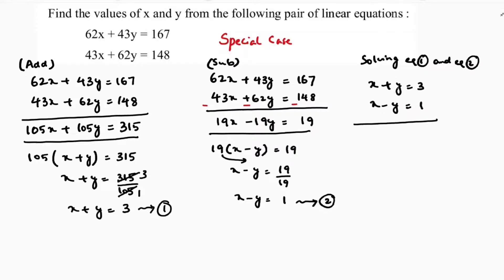So I'll add them. Plus y minus y cancel, so 2x equals 3 plus 1, which is 4. x equals 4 by 2. x equals 2.